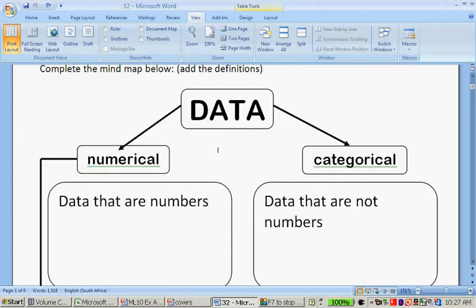Now numerical data is data that are numbers. So it is a set of data of people's ages for instance, or their shoe sizes or their dress sizes. So it will be 1, 2, 3, 4, 5, or it will be people's ages 13, 14, 13 and a half, or it can be different times. So that is numerical data.